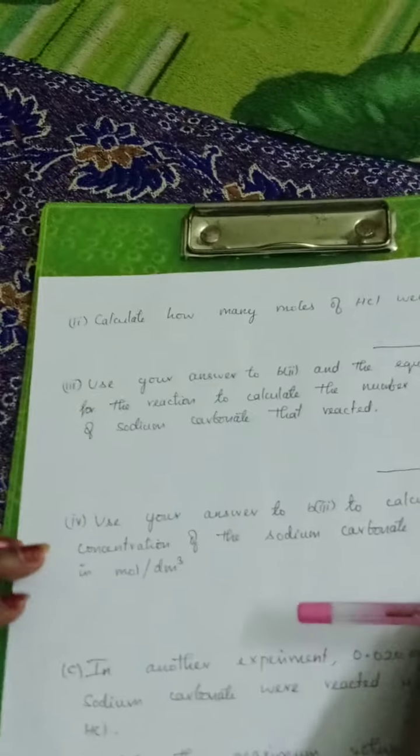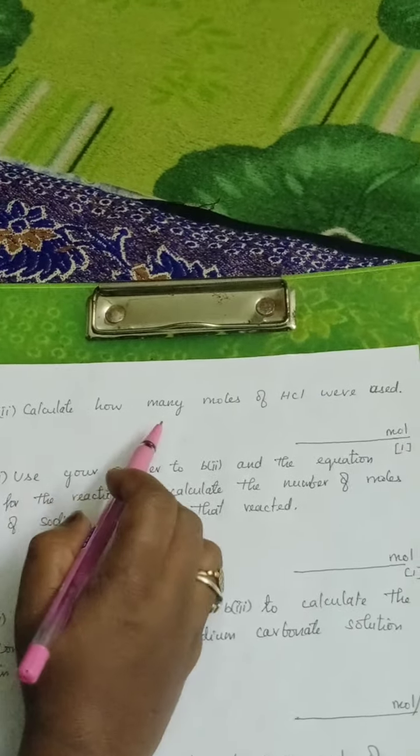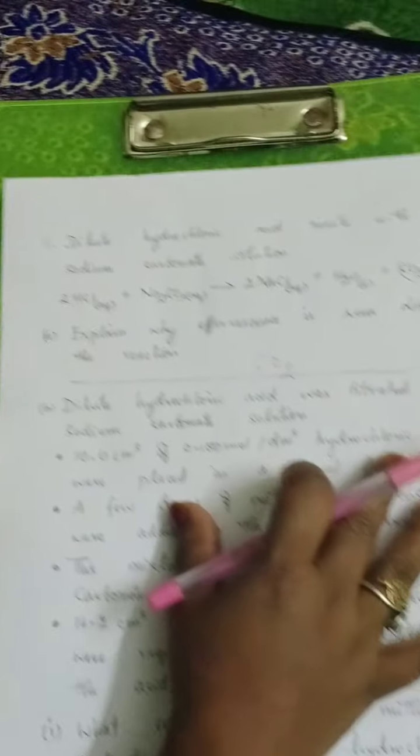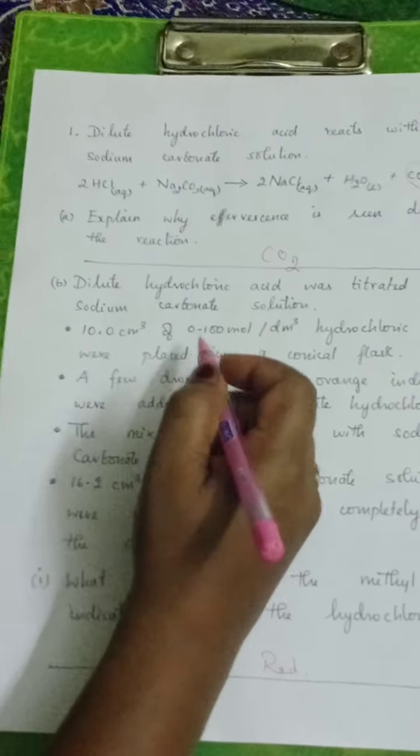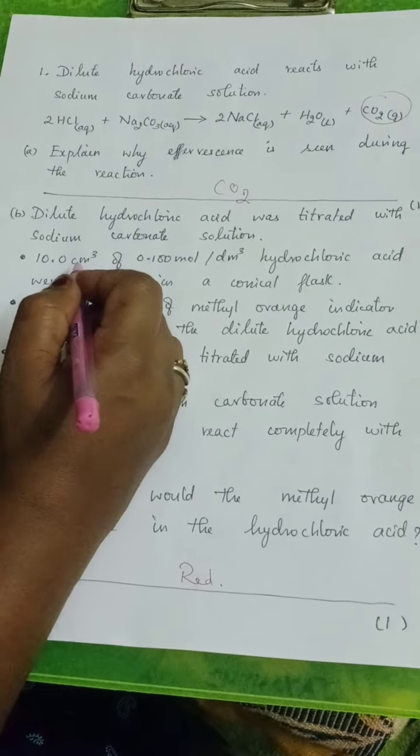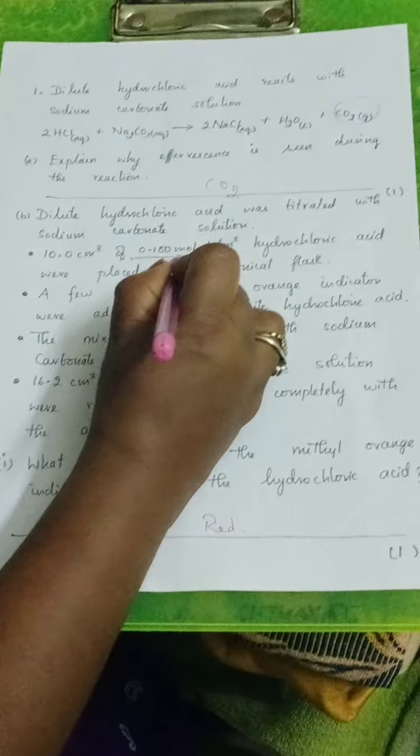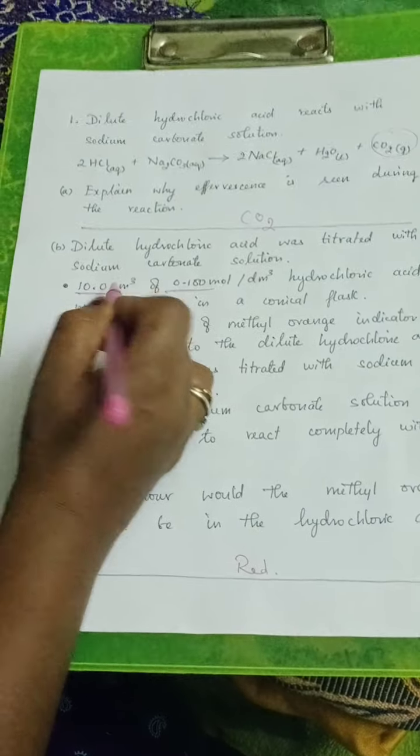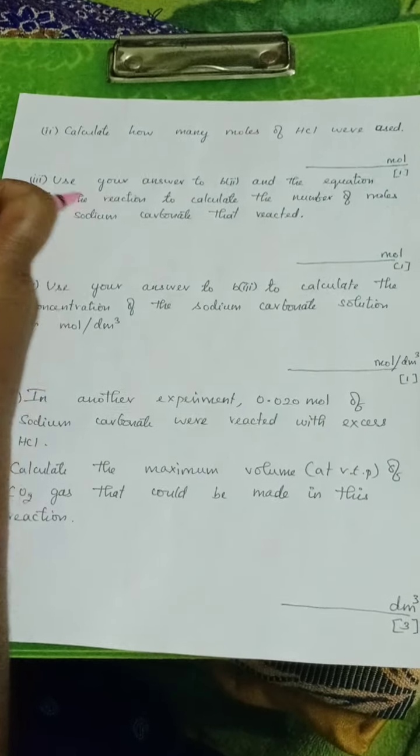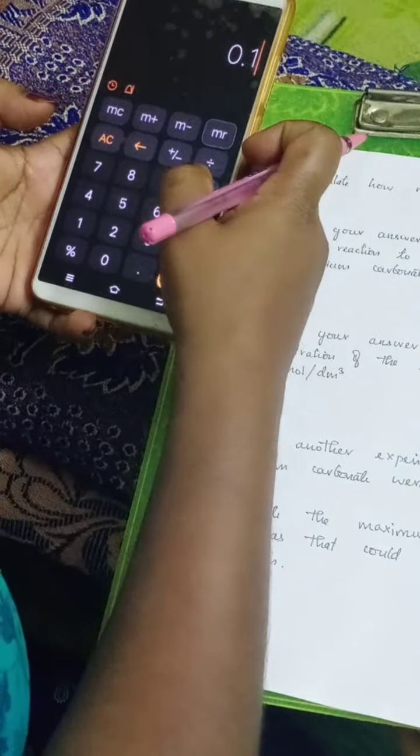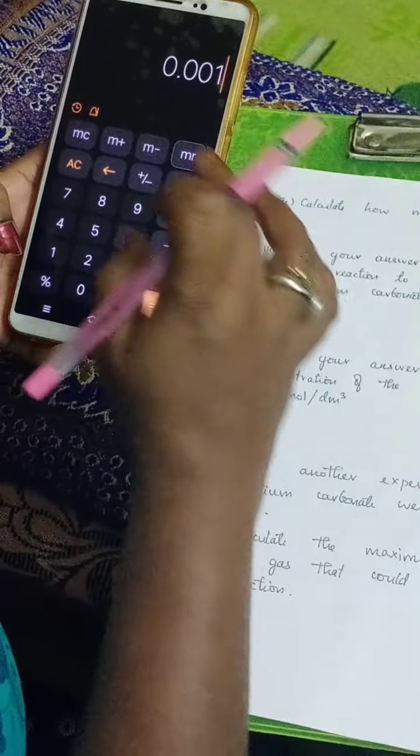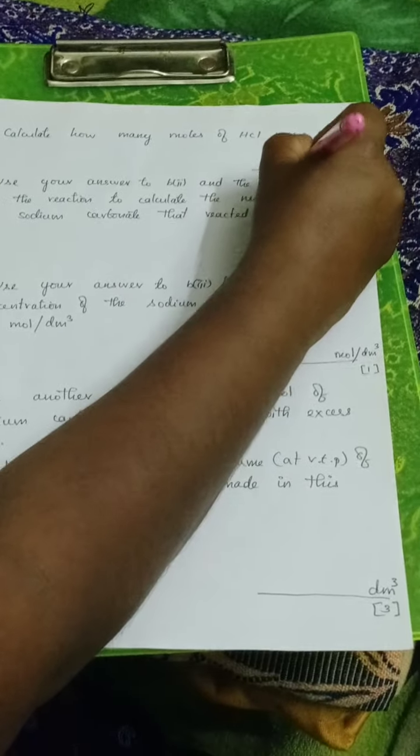Now come to a stoichiometric question. Calculate how many moles of HCl were used. To calculate the moles of HCl, see the given content. The concentration is 0.100 mole per decimeter cube, and the volume is 10 centimeter cube. So to find the moles, 0.1 into 10 by 1000. That means 0.001.